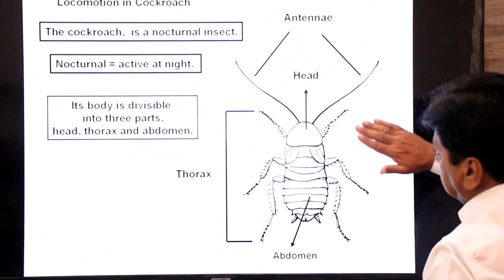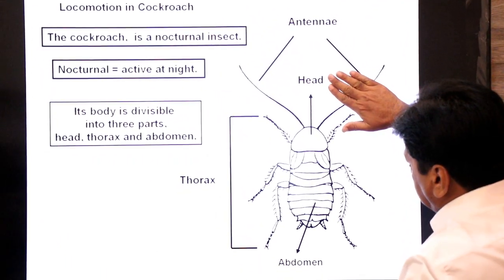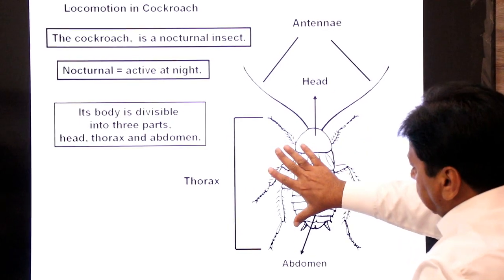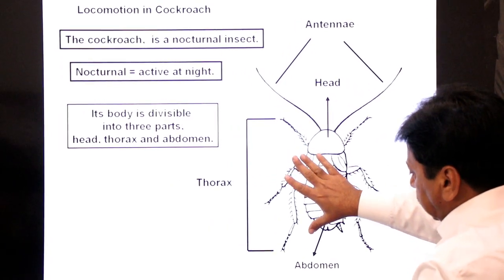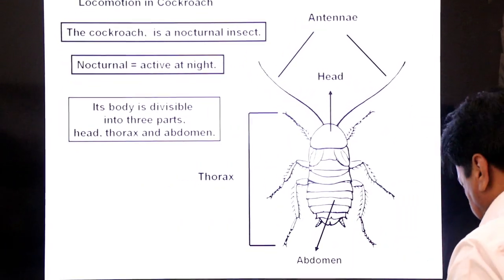The body of cockroach is divided into three parts: the head part (anterior), the middle part (thorax), and the posterior part (abdomen).